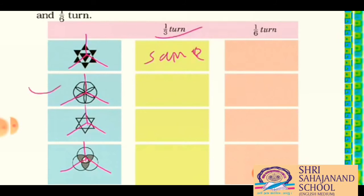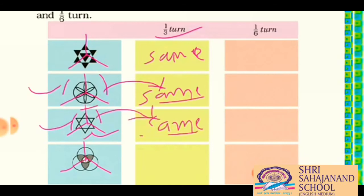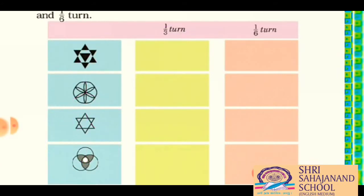Now come to the second picture. We have a circular shape with flower patterns. In every one-third turn it is looking the same, so you can draw this picture here — it will also look the same. In the third picture we have triangles, and if you properly observe, in each one-third turn it will also look the same. And at the last we have three circles, and in each one-third turn it will also look the same. So all these shapes are looking the same in every one-third turn — you will draw the pictures, not write 'same'.